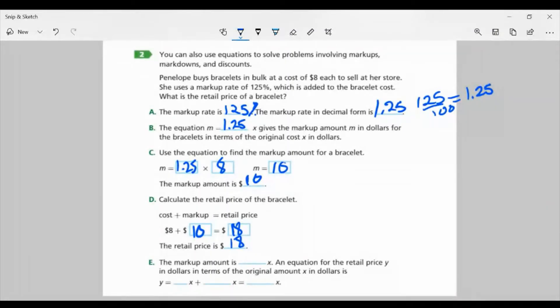For part E, the markup amount is 1.25X. An equation for the retail price Y in dollars in terms of the original amount X in dollars is Y equals 1X plus 1.25X. We have 1X because that represents the original cost, which was 100%. And then we have 1.25X, which represents the markup. And when we combine those, we get 2.25X. This is because we're over 100%. That's why the price more than doubled, because we went over by another 125% of the original cost.